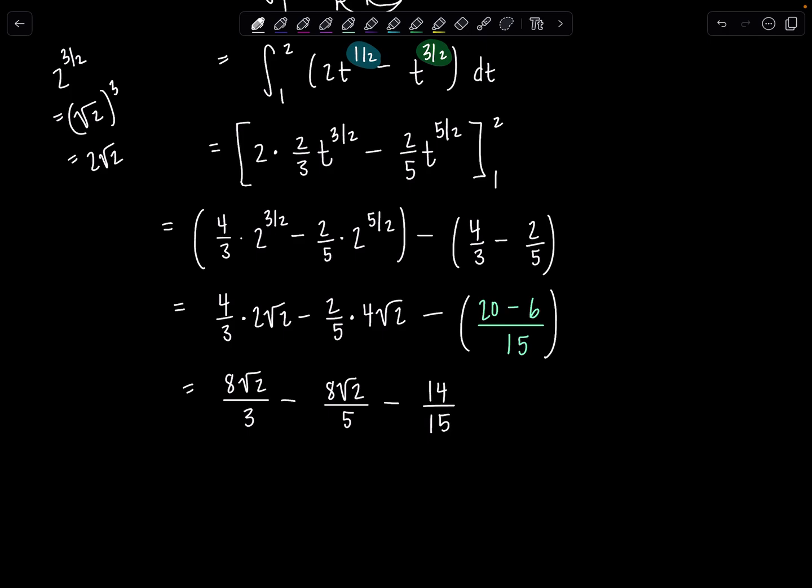So here we have 8 rad 2 over 3 minus 8 rad 2 over 5 minus 14 over 15. And it looks like the LCD is still 15. So let's go ahead. I'm going to multiply top and bottom by 5 here, by 3 here, and then we should be good to go. So this will be 40 rad 2 minus 24 rad 2 minus 14 over 15. And then we can combine our like radicals. Oh yes, keep it going. So this is going to be 16 rad 2 minus 14 over 15.